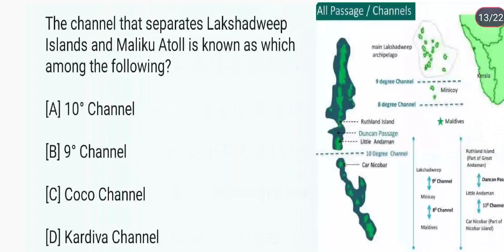The channel that separates Lakshadweep Island and Maldives Atoll is known as which among the following? Isko kaha jata hai 9 Degree Channel. The 9 Degree Channel Lakshadweep Island ko Maldives Atoll se alag karta hai.